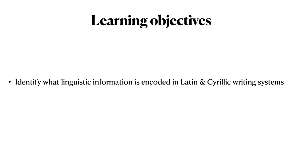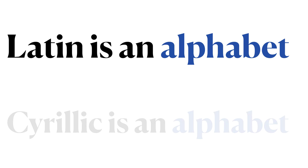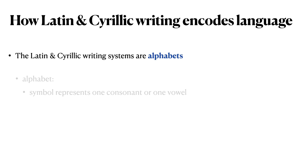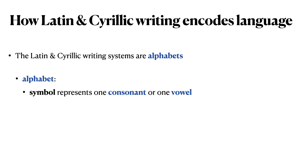Our learning objective is to identify what linguistic information is encoded in the Latin and Cyrillic writing systems. The Latin writing system is an alphabet, and the Cyrillic writing system is also an alphabet. An alphabet is a phonographic writing system in which each symbol represents either a consonant or a vowel.